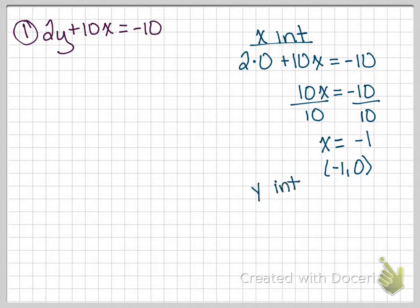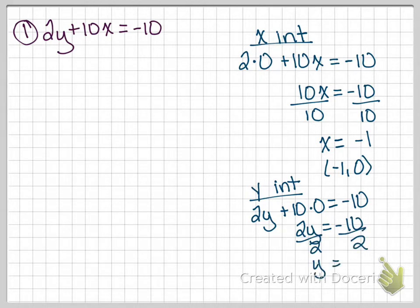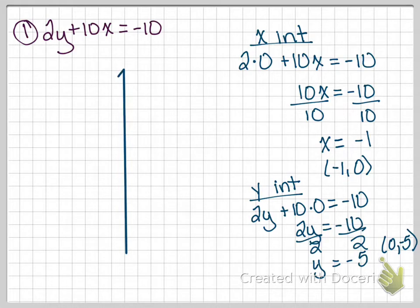For the y-intercept, plug 0 in for x. So we have 2y plus 10 times 0 equals negative 10. Since 10 times 0 is 0, we have 2y equals negative 10. Dividing by 2, y equals negative 5, written as 0, negative 5. Remember, a common student mistake is combining these into one ordered pair of negative 1, negative 5 — that is incorrect.